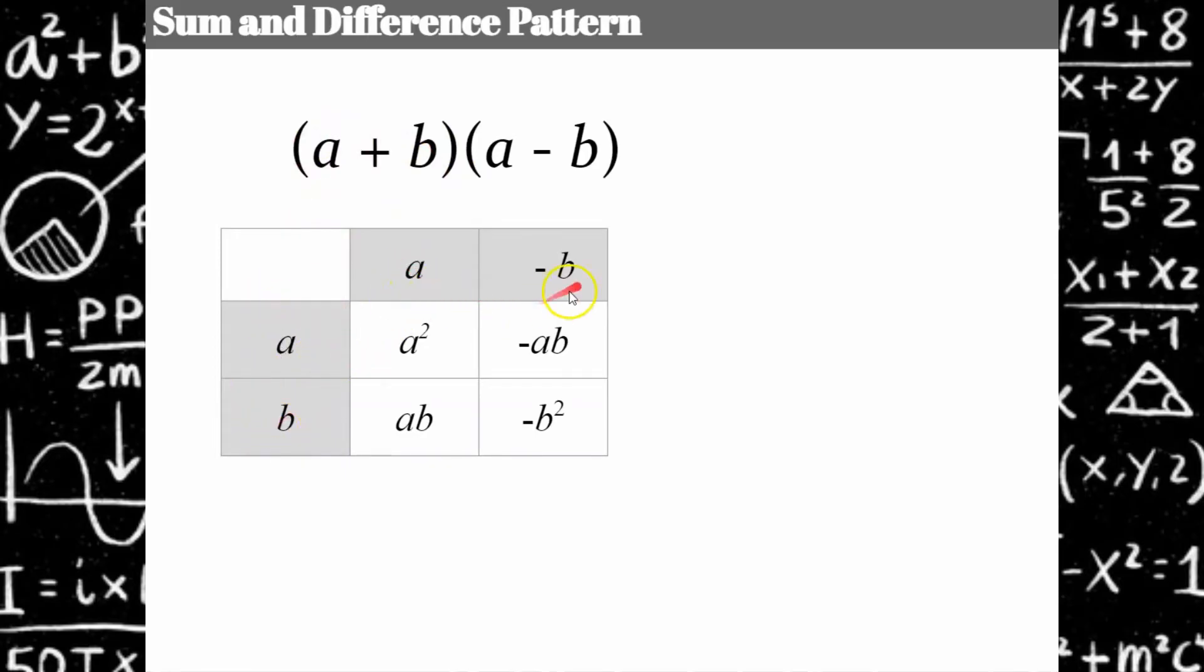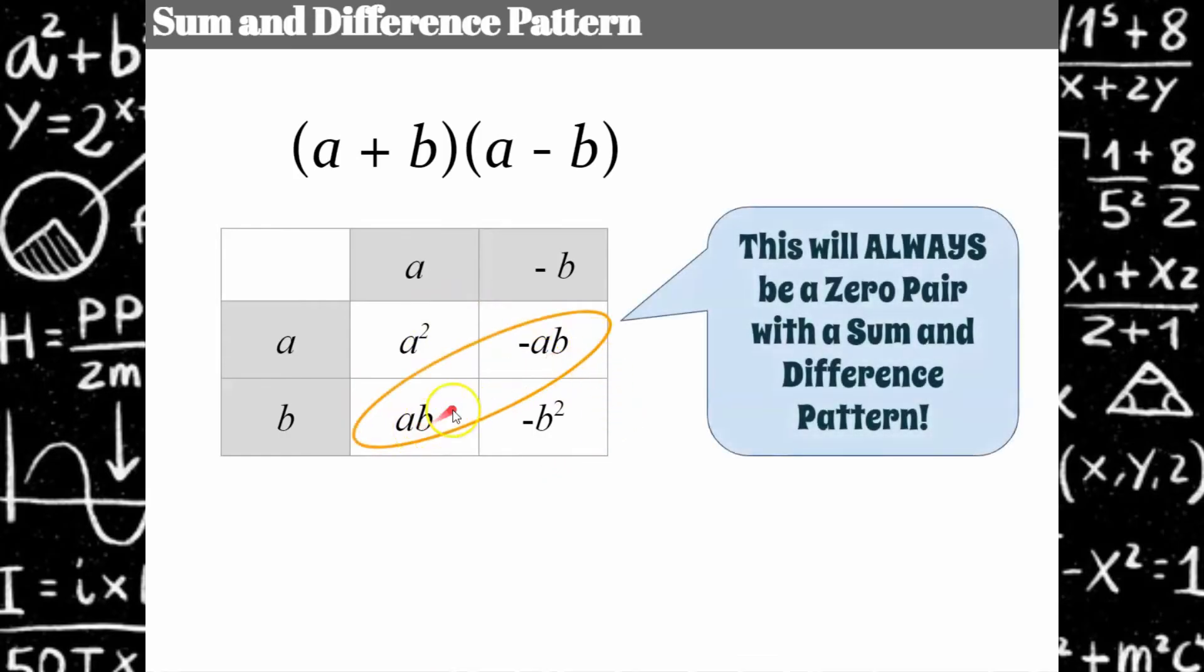So I have my first binomial here, A and positive B. I have my second binomial here, A and negative B. When I fill the cells by multiplying each term, you're going to see this magic happen in our like terms. Because I have a sum and difference, your like terms in your diagonal here of your table are always going to make a zero pair, and this is where the sum and difference pattern comes. So it's going to end up that if you have a sum and a difference,